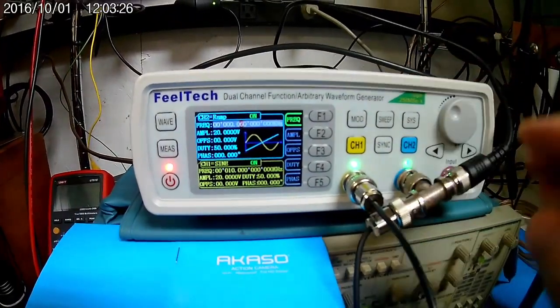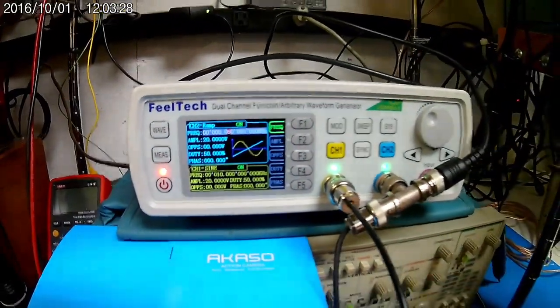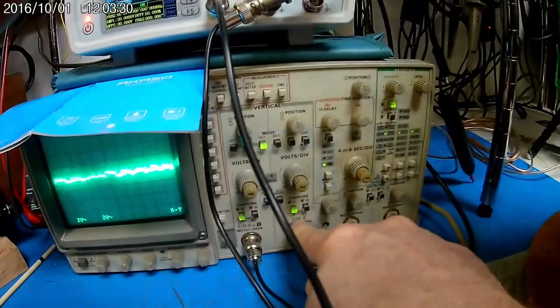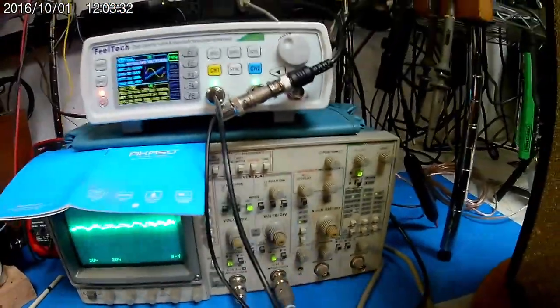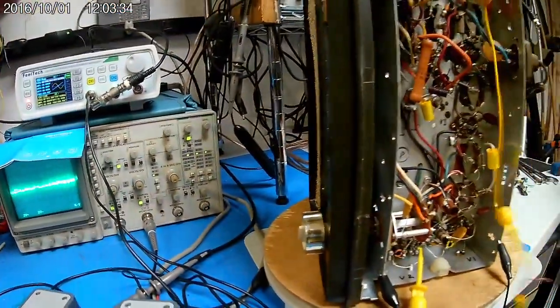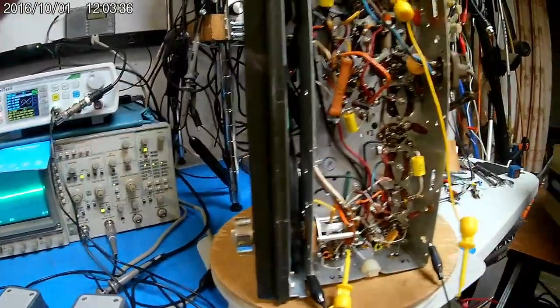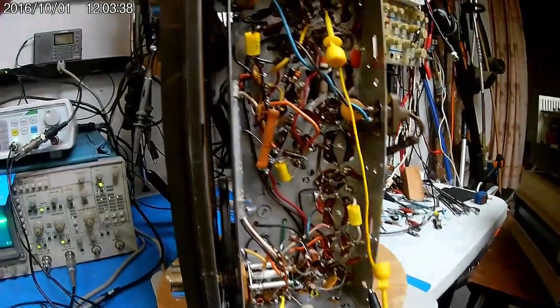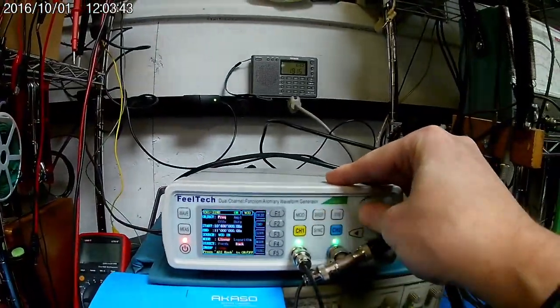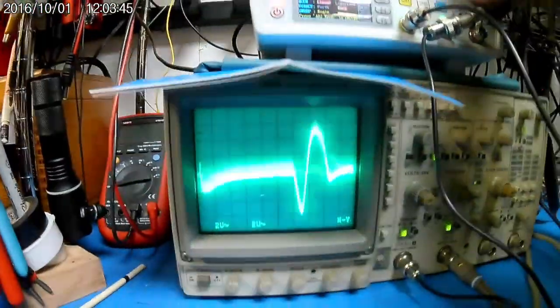Now again, we're taking a signal going into the Y-axis, and that Y-axis signal is coming out of the radio at V5's grid. And we're going to put this thing into sweep, and we'll see what that looks like.